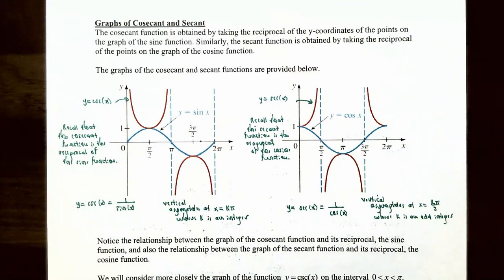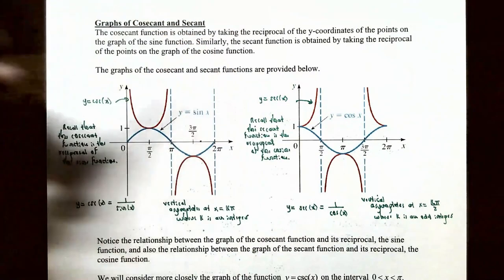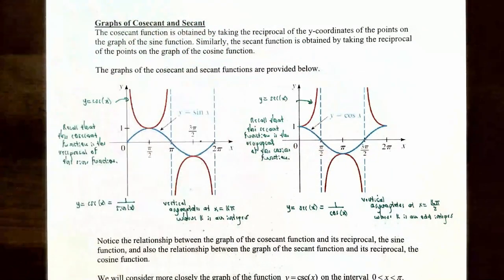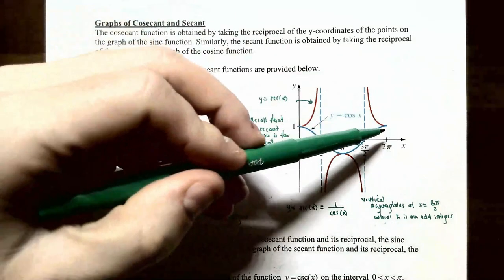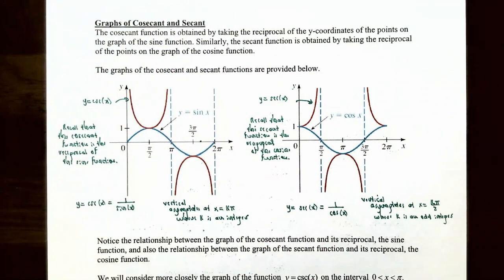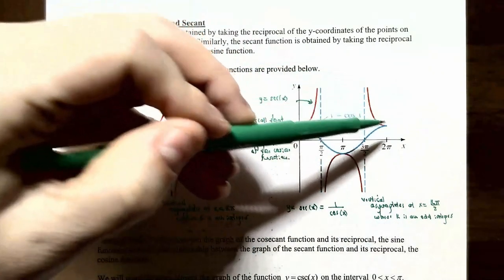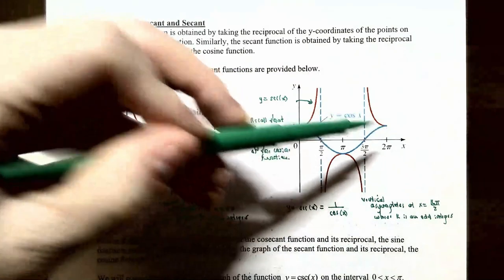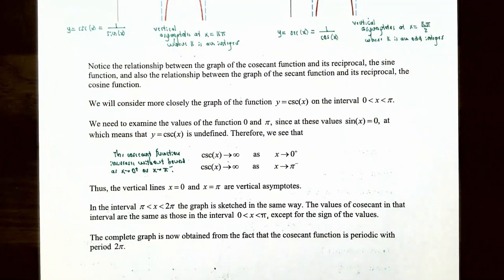On the right side of x equals 3π/2, the cosine function is positive again, so the reciprocal values are positive and the graph increases without bound as you approach x equals 3π/2 from the right. At 2π, cosine of 2π is 1, so secant of 2π is 1 as well, and the graph comes down to (2π, 1). That completes one period of the secant function between x equals 0 and x equals 2π. Notice there is a relationship between the cosecant and its reciprocal the sine function, and the secant and its reciprocal the cosine function.